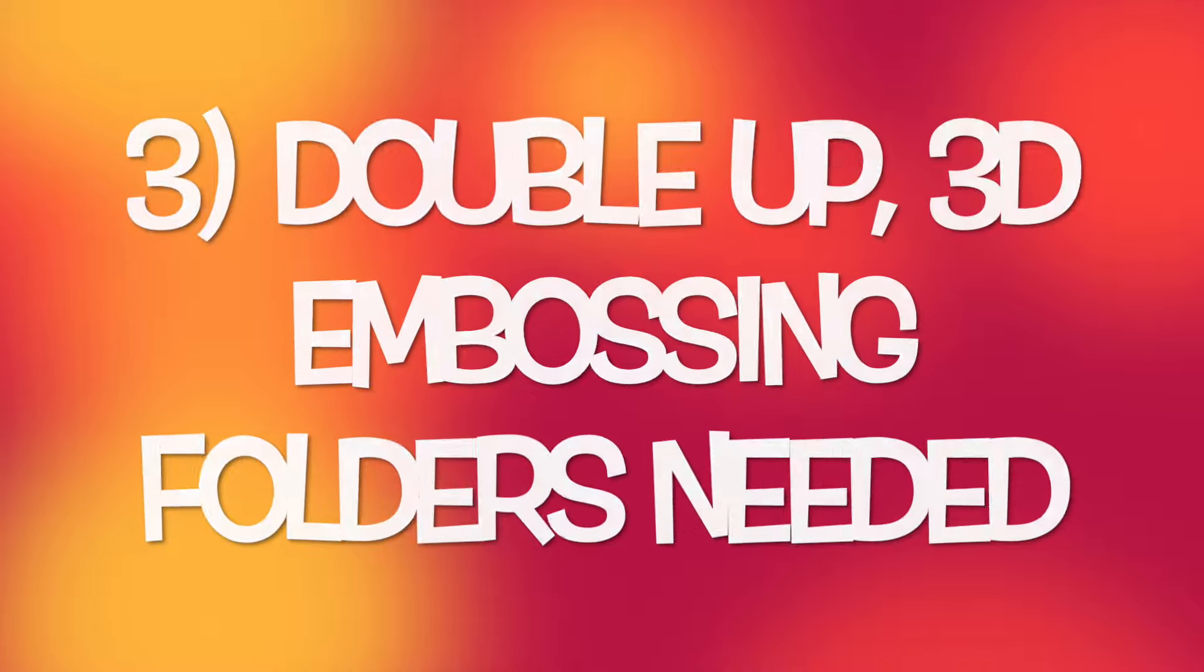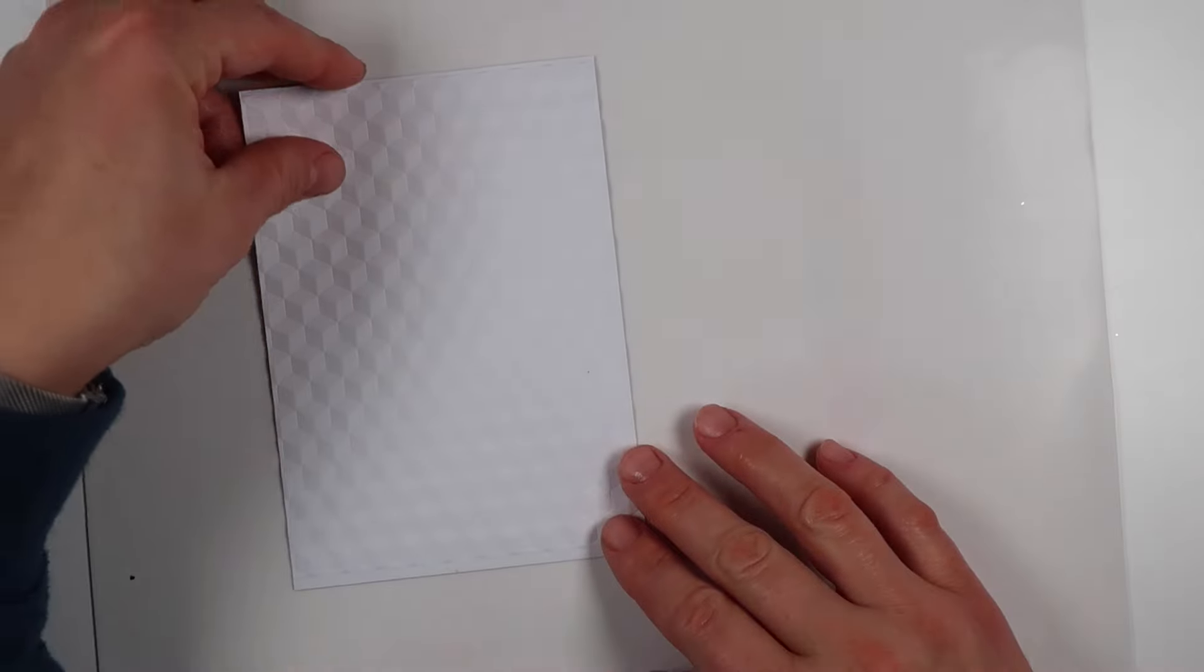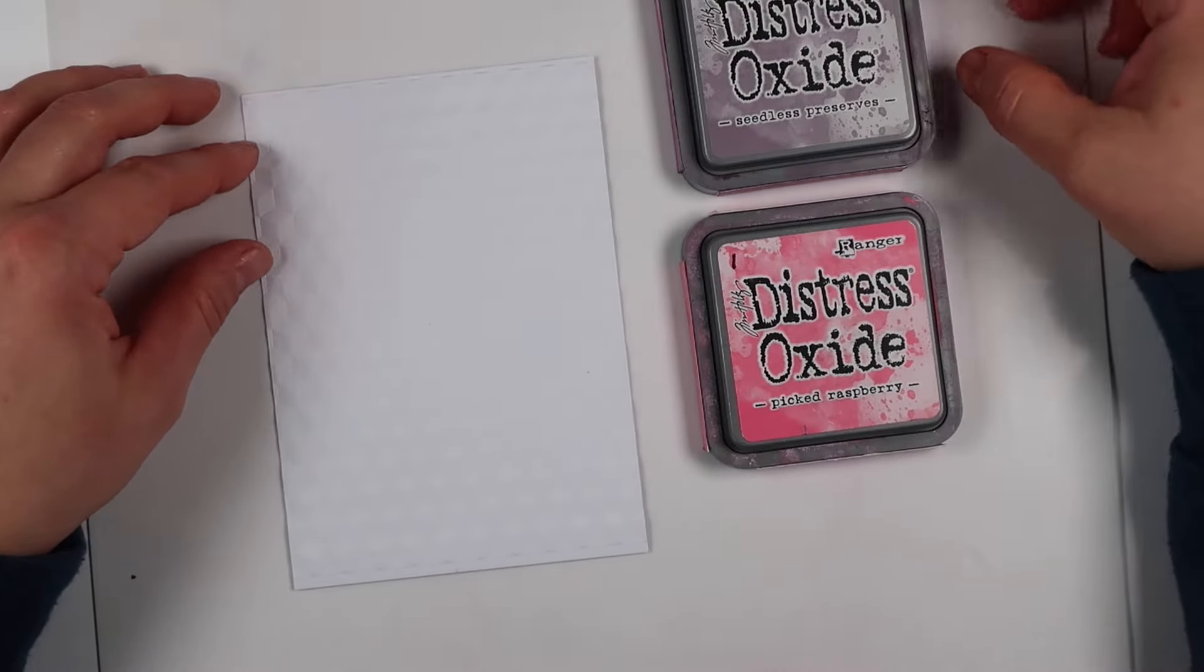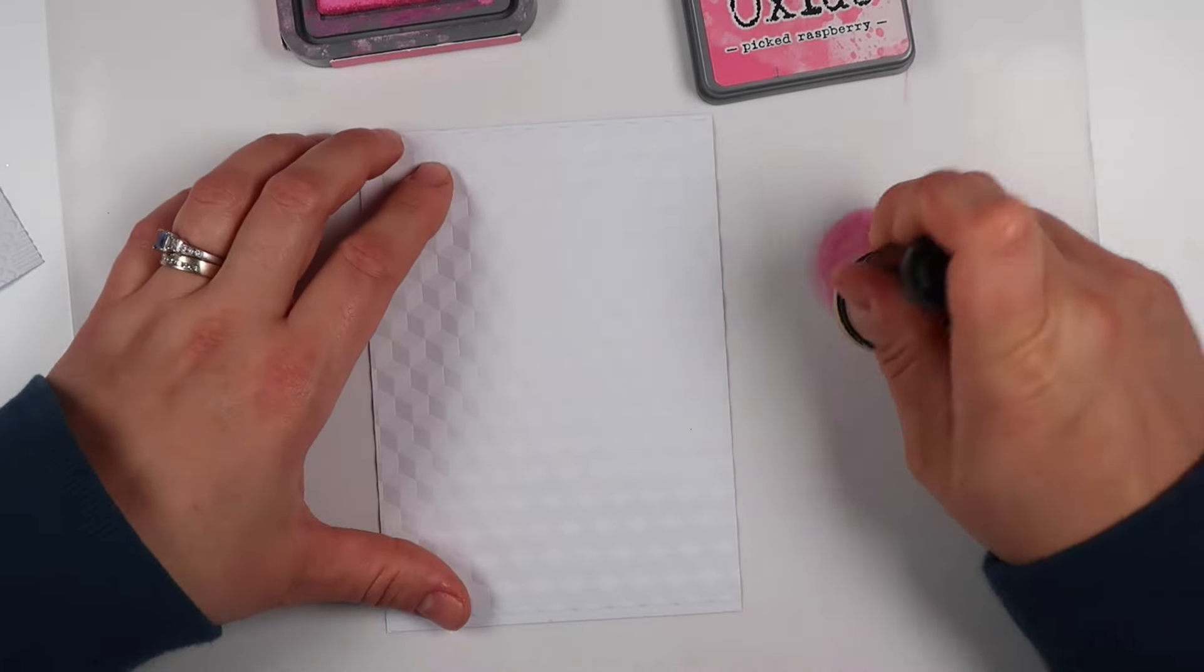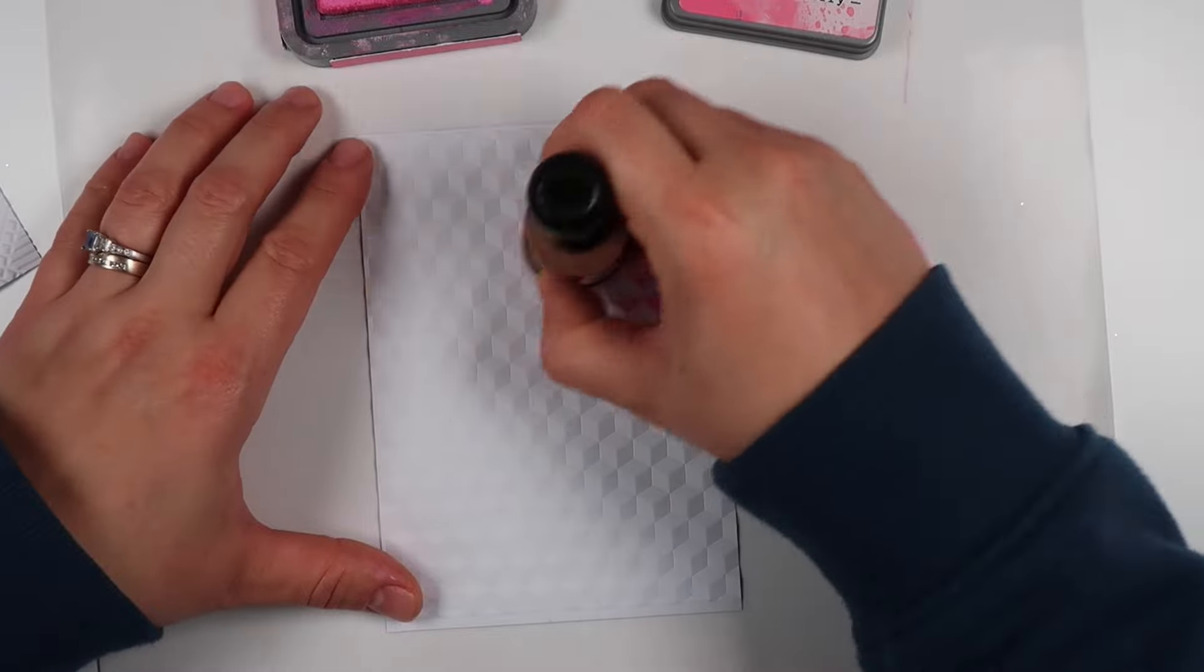Now if you want to mix it up even more, you can double up on your inks. You could even triple if you start with colored cardstock. I'm starting with a lighter color—picked raspberry—and doing a nice gentle roll over the top of the surface. Then I'm coming in with a darker color. I've chosen a darker color so it pops off a bit more and doesn't give me a muddy look.